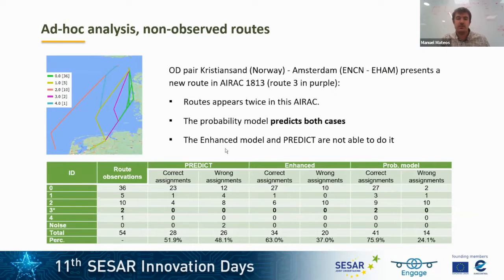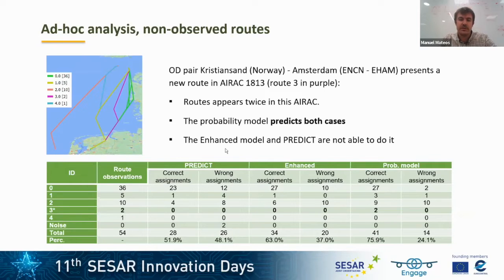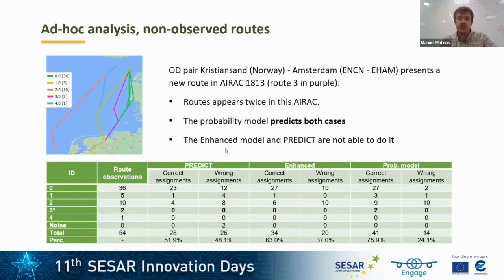We also verified that the model can predict non-observed routes. For example, a new route appeared between Kristiansand in Norway and Amsterdam in AIRAC 1813. Route 3, shown in purple, appears twice in that AIRAC. Our model is able to predict it both times, whereas the enhanced model and Predict are not able to do so. The results for each route cluster — whether predicted correctly or not — are detailed in the table.